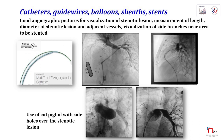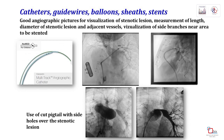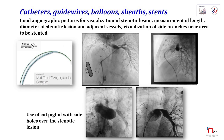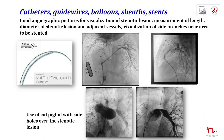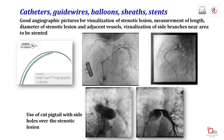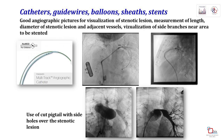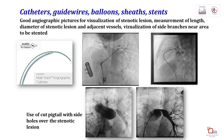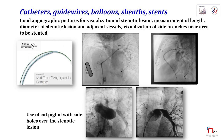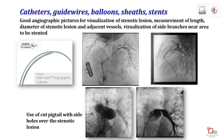The multi-track catheter is tracked over the wire in a monorail fashion, and markers provide reference for measurements of length. We can also measure pressure gradients across lesions with the wire still remaining in place. If you don't have it available, a cut pigtail with side holes straddling the lesion also serves the same purpose, giving nice images of the lesion and the adjacent vessels.